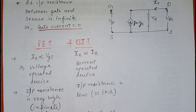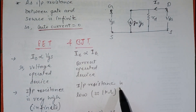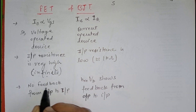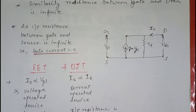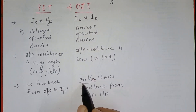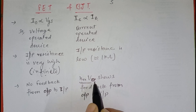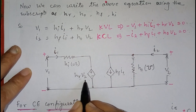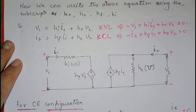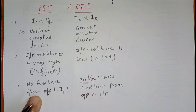In the FET model, input resistance is very high — it is infinite — because the gate is reverse-biased. In the BJT model, input resistance is very low, approximately 1 kilohm. In the case of the field effect transistor, there is no feedback from the output to the input. But in the case of BJT, the term hre times Vc — the output voltage — shows feedback from the output to the input side. So in BJT there is feedback, and in FET there is no feedback.